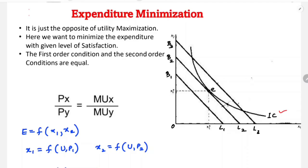The consumer's equilibrium — both in utility maximization and expenditure minimization — occurs where the slope of the indifference curve becomes equal to the slope of the budget constraint or budget line. The expenditure function is the opposite of utility maximization: here we want to minimize expenditure for a given level of satisfaction. The first and second order conditions are the same in both cases.